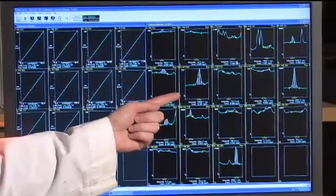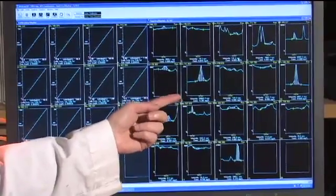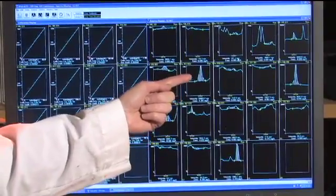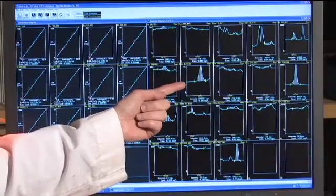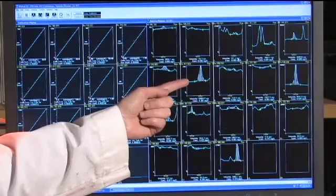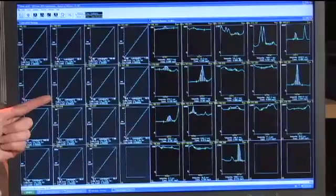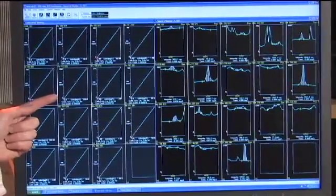So if you look at calcium here at 317.933 nanometers, we get a signal and the intensity of that signal is proportional to the concentration of calcium in the sample. So we compare that intensity to our standard curve and calculate the concentration of calcium in the sample.